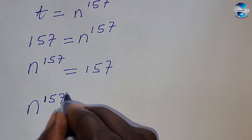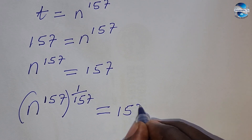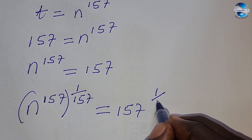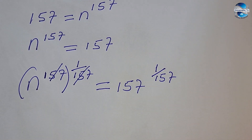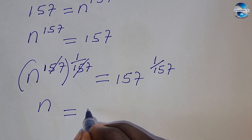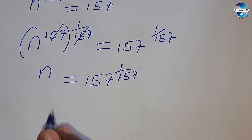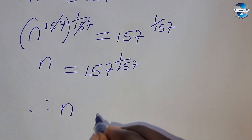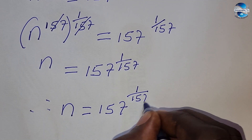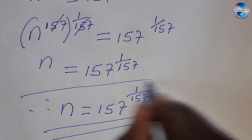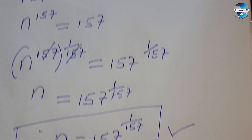We have n to the power of 157, all raised to one over 157, equals 157 all raised to one over 157. According to the law of indices, the left side simplifies — the exponents cancel — leaving n to the power of one, which is just n. Therefore, n equals 157 raised to the power of one over 157.